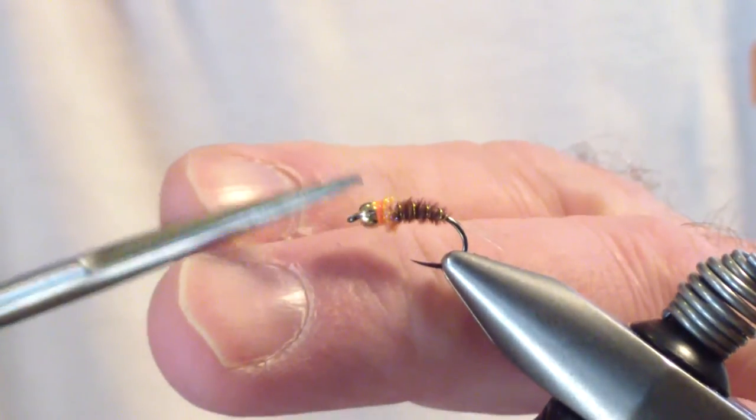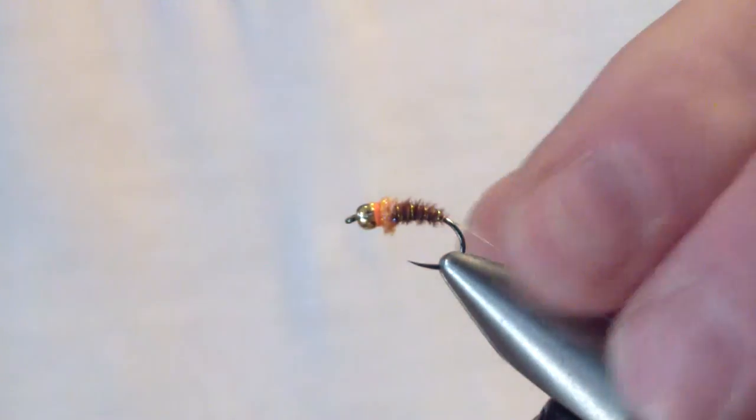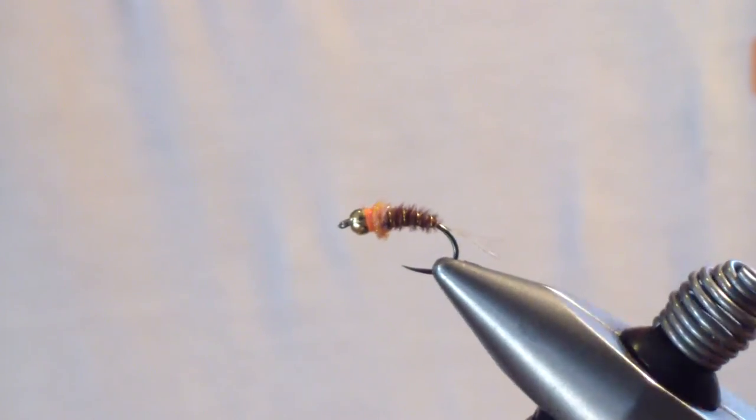And then clip off your excess. And trim a little bit of that UV that I trapped. But you really don't have to. And there it is. The Frenchie.